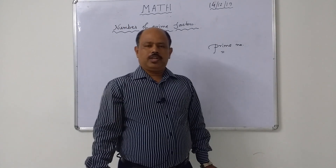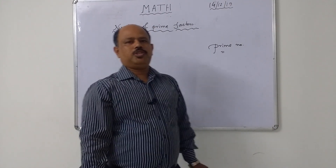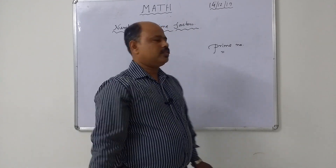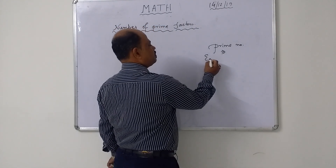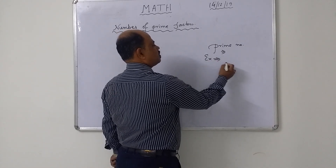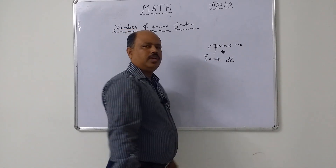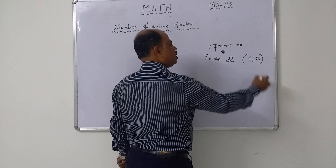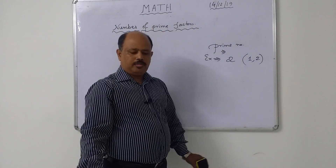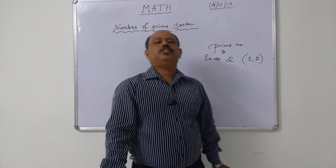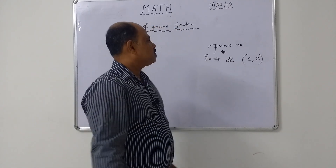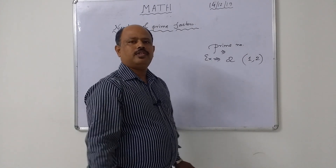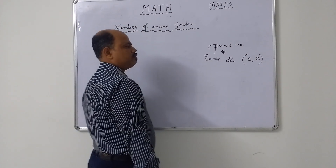In English, a number is called a prime number when the number is divisible by one and itself. For example, two is a number. A number is called a prime number when it is divisible by one and itself. The smallest prime number is two. Prime numbers start from two.